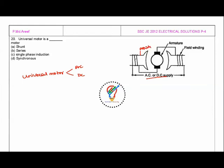The field winding is connected in series with the armature winding. That means both armature winding and field winding, both are connected in series. So that motor is called a series motor.